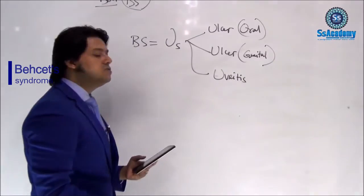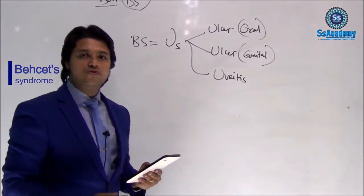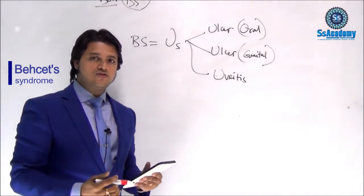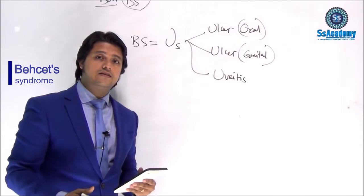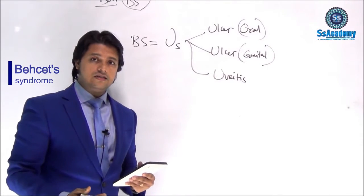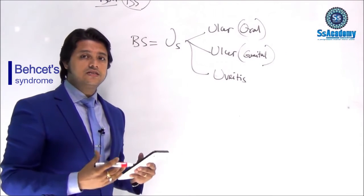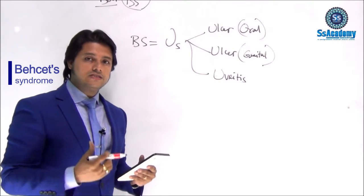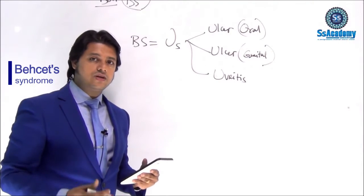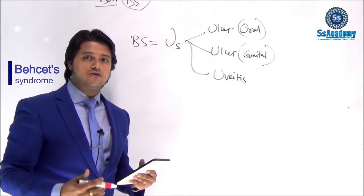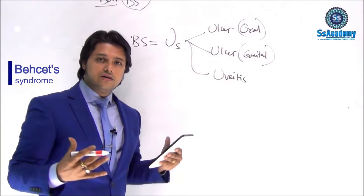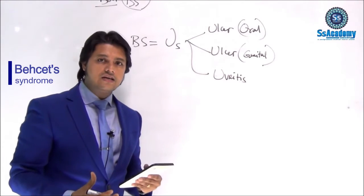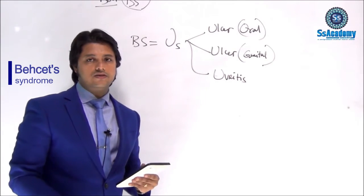So the three U's together make the diagnosis of Behçet's syndrome likely: U for oral ulcer, U for genital ulcer, and U for uveitis.